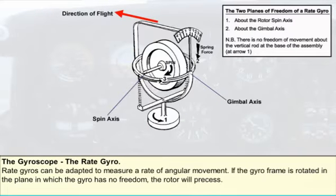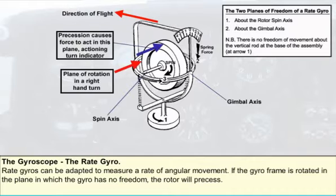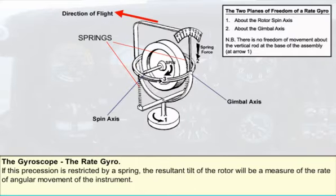If a gyro has only one gimbal ring — with consequently only two planes of freedom — it can be adapted for use as a rate gyro, which will measure a rate of angular movement. If the gyro frame is rotated in the plane in which the gyro has no freedom, the rotor will precess unless restrained, until its plane of rotation coincides with the plane in which the frame is being turned. If this precession is restricted by a spring,